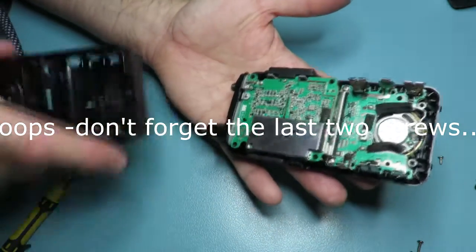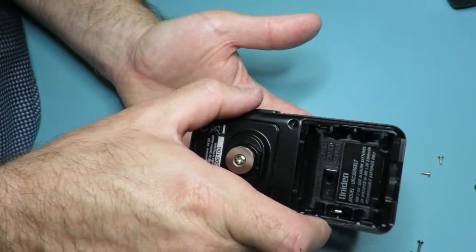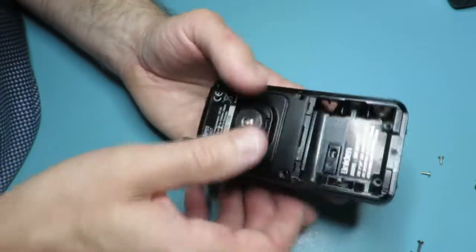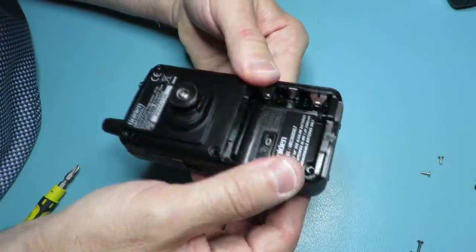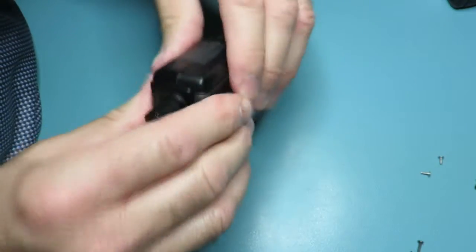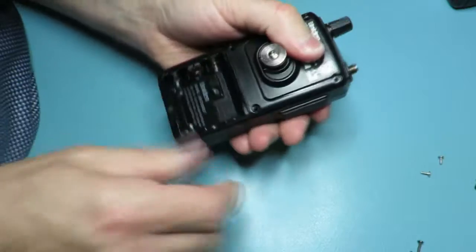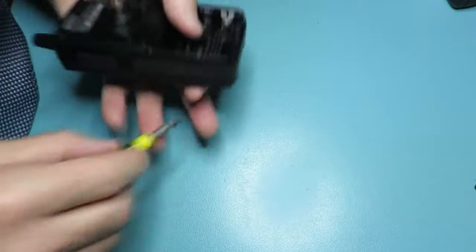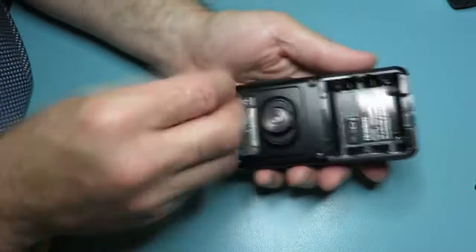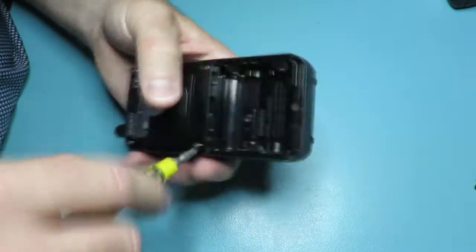There we go. Okay, and then just fit the top cover. You should just clip it in. Again, check that it's all lined up correctly. Nothing's been trapped or caught. Fit the two bottom screws. Again, these will be the short ones. And then the four on the case.